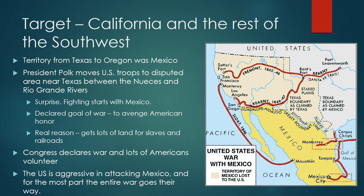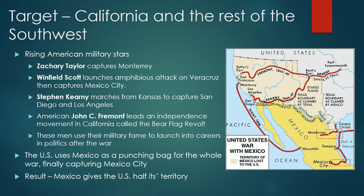Congress declared war and lots of Americans volunteered. The state of Tennessee had a huge number of volunteers, one of the reasons it's known as the Volunteer State. The United States prosecuted this war very aggressively, attacking Mexico, and for the most part the entire war went the Americans' way. This Mexican-American War was a very one-sided contest, even though the Mexicans believed they could win and march to Washington DC, and many European countries also thought Mexico would win. Some rising military stars emerged among the Americans during this war, and while I won't cover every battle, it's important to note these individuals because they'll pop up in politics later as we study the lead-up to the Civil War.